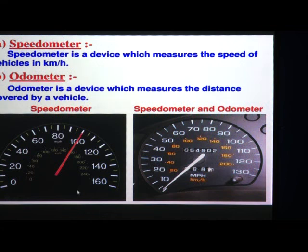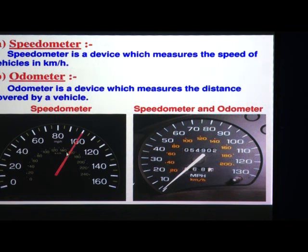Suppose the needle is showing 100. And 160 means kilometer per hour — so this speedometer is showing that its unit is kilometer per hour. This speedometer has a unit of kilometer per hour and you can know whatever the speed of this vehicle is.